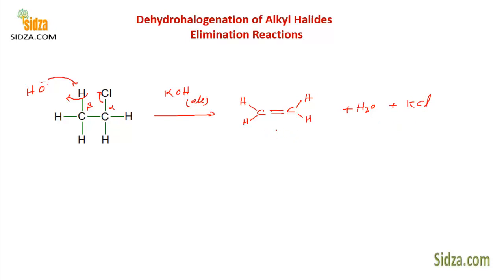This is called an elimination reaction because hydrogen and the halogen are being removed from two adjacent carbon atoms to give an alkene. You can get alkenes from alkyl halides by reacting with strong bases like KOH in alcoholic medium. You can also get the same product using the sodium salt of an alcohol — such as CH3CH2ONa — or potassium tert-butoxide.